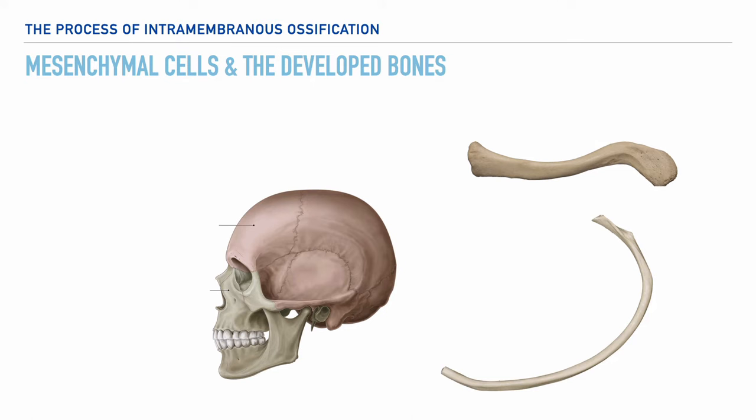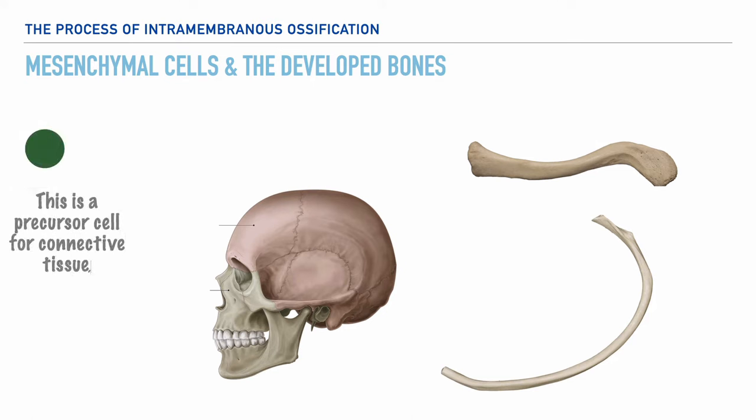In this process, we start with unique specialized cells called mesenchymal cells, and this type of cell is a precursor cell for connective tissue. In other words, it's this cell that leads to the development of a variety of connective tissues. For the purposes of this video, we're going to utilize a green circle to represent the mesenchymal cell.